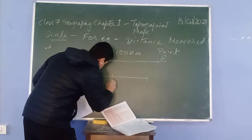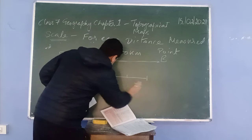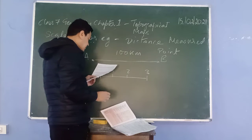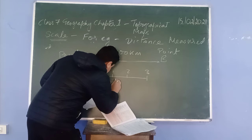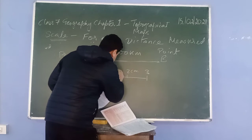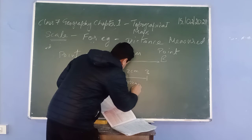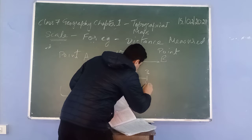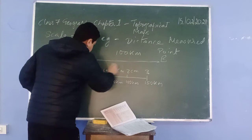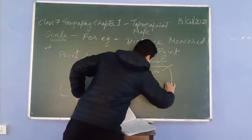The scale stands from 0, 1, 2, 3 — I am writing centimeters at the top so that it does not get confused. One centimeter means 50 kilometers, so 2 centimeters is 100 kilometers, and 3 centimeters is 150 kilometers. The upper part is presented in centimeters; the lower part is presented in kilometers.